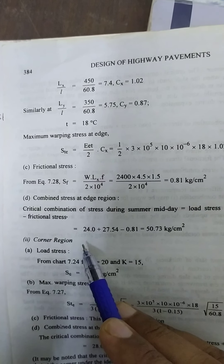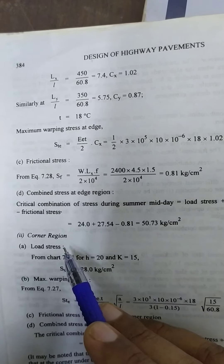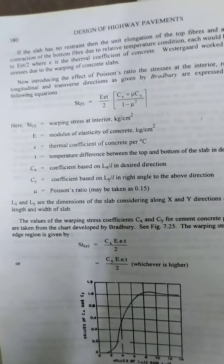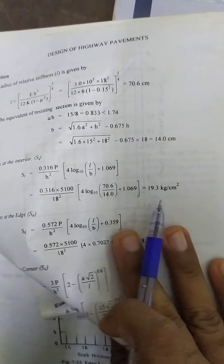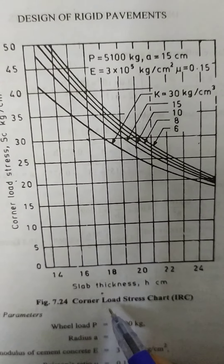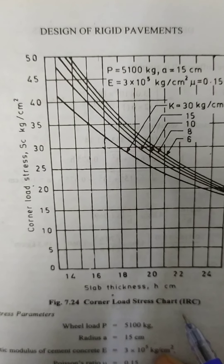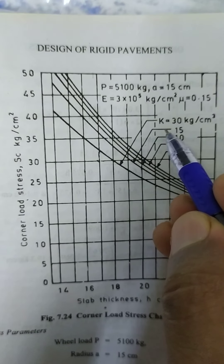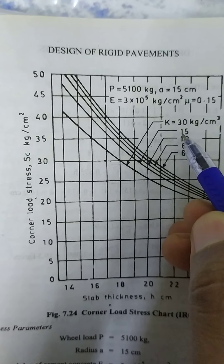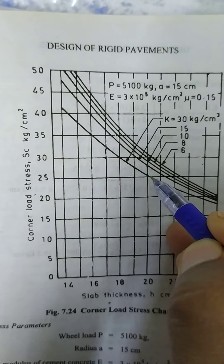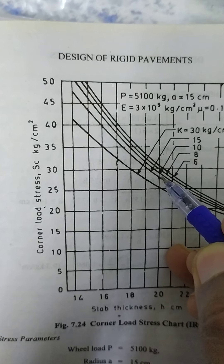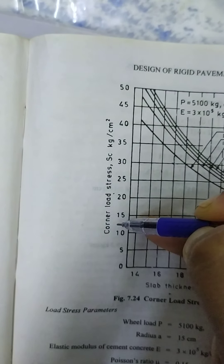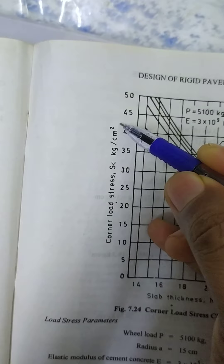The second case is the corner region. Corner load stresses are from chart 7.24. Referring to chart 7.24 at slab thickness 20 centimeters and the second curve for k = 15 kg per centimeter cube, the intersection gives approximately 28. So corner load stress SC is 28 kg per centimeter square.